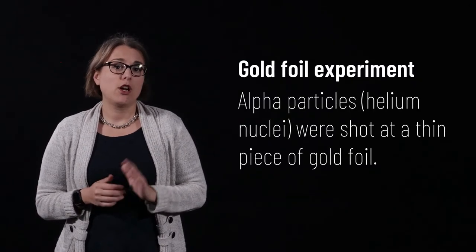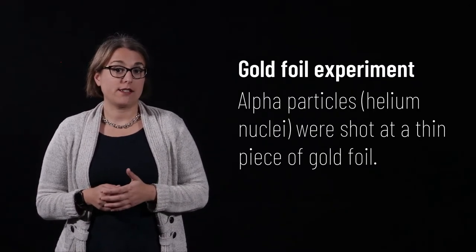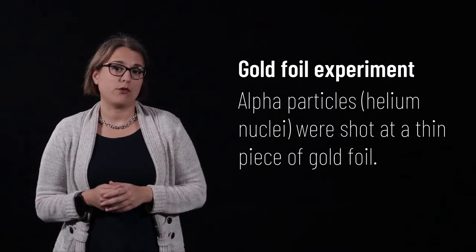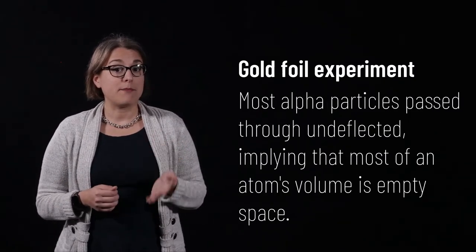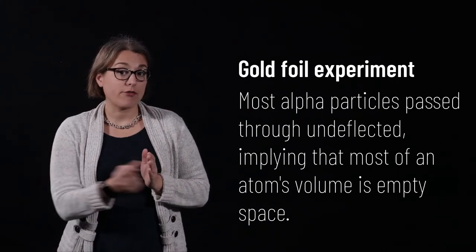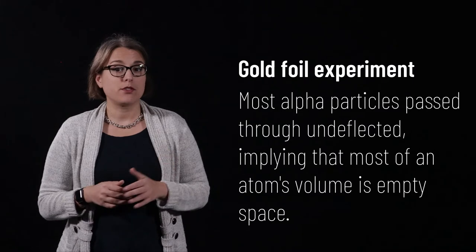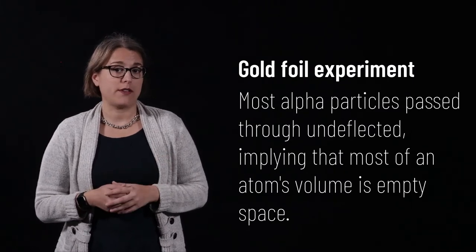The Plum Pudding Model was a good hypothesis at the time, but was soon shown to be incorrect. In the early 1900s, Ernest Rutherford and his colleagues conducted an experiment where they shot alpha particles at a thin piece of gold foil. They found that many of the alpha particles passed through the thin piece of foil, undeflected. This implied that most of the volume of gold foil is composed of empty space.